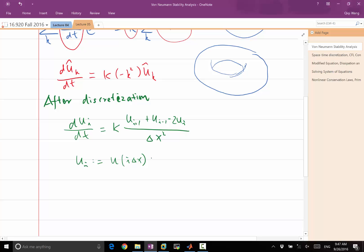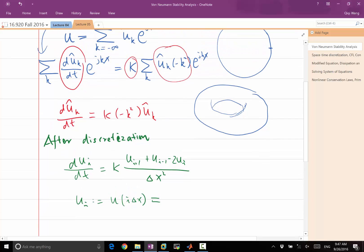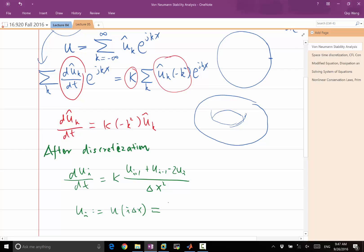If you represent using the same Fourier series, we get a summation over k of u hat of k times e to the jk, instead of x, we have i delta x. Now you know why we use j for the square root of minus 1, because we have i as the index.